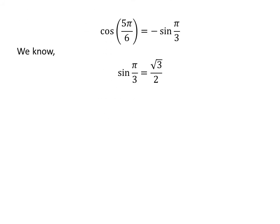We know sin of pi upon 3 is equal to square root of 3 upon 2. So, cosine of 5 times pi upon 6 is equal to minus square root of 3 upon 2.